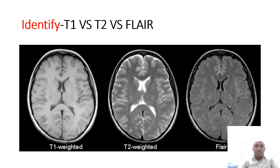How to easily identify T1, T2, and FLAIR? In T1, if you see CSF is black — very easy. In T2, CSF is white. FLAIR is the flip side of T2, where you can see hyperintense ventricular ooze along the walls of the ventricle.